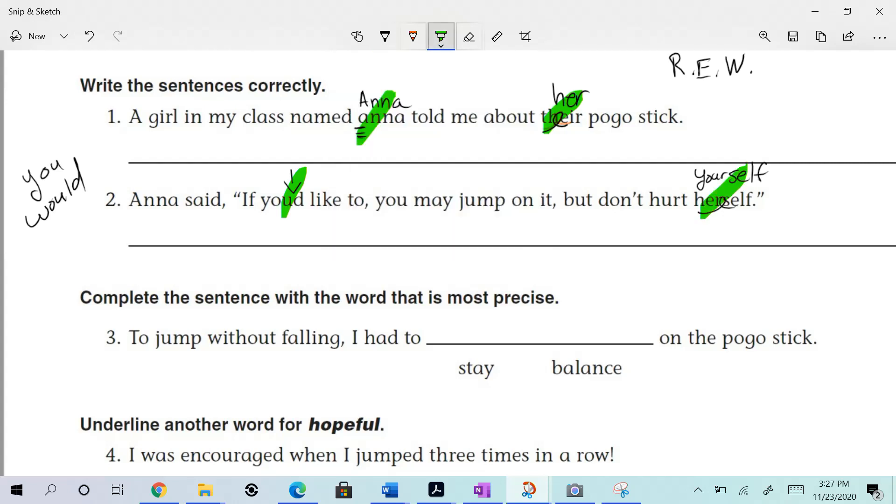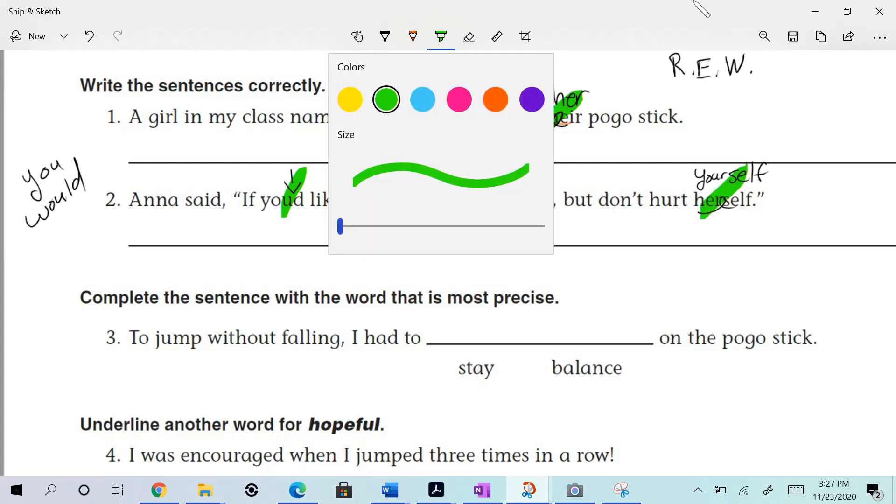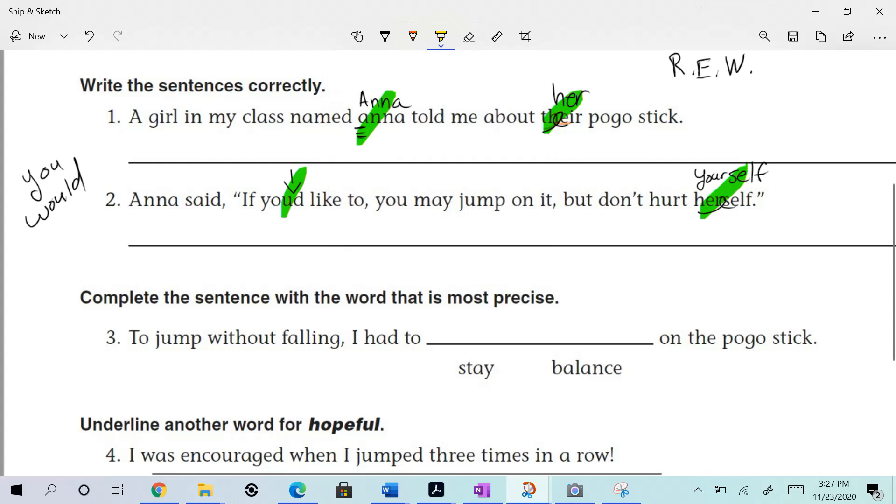Real bonus. You know what I'm gonna ask, don't you? Where is the tagline? Come on Jackson, you know this. Where's the tagline? Right here. Tagline tells who is saying what. Someone's speaking in the sentence, and who is it? It's Anna. And Anna said, if you'd like to, you may jump on it, but don't hurt yourself. How do we know she said that? Something's being spoken because of what's highlighted in blue - quotation marks, right?